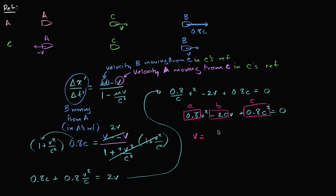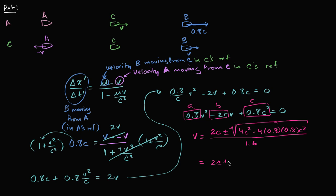v is going to be negative b — the negative of negative 2c, so it's 2c — plus or minus the square root of b squared, which is positive 4c squared, minus 4 times a, so minus 4 times 0.8 times 0.8c squared. All of that over 2a, which is 1.6. I can factor out 4c squared: that gives 4c squared times 1 minus 0.64, all over 1.6.